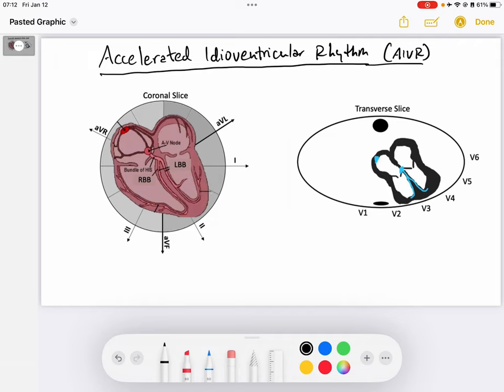So AIVR, for short, is a rhythm that occurs and as its name implies, it is coming from the ventricles. We said in our previous video that ventricular rhythms, ventricular escape rhythms, they usually occur somewhere 20 to 40 beats per minute. So that's what we said a usual ventricular escape rhythm would do.